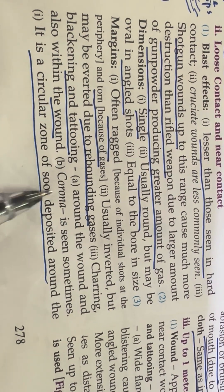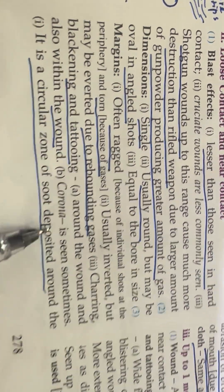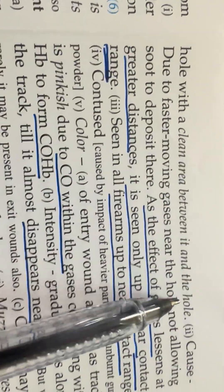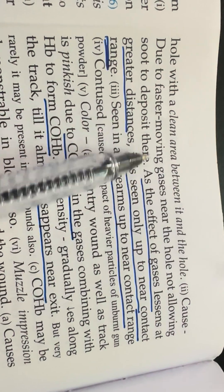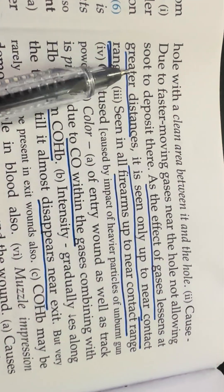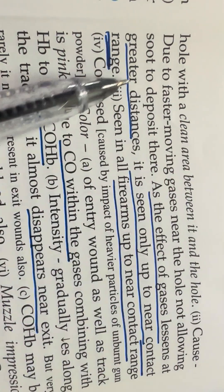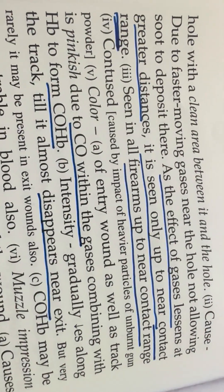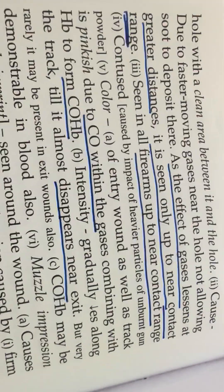Singeing, blackening, and tattooing are present around the wound and also within the wound. A corona is sometimes seen — a circular zone of soot deposited around the hole with a clean area between it and the hole. This is due to faster-moving gases near the hole not allowing soot to deposit there. As the effect of gases lessens at greater distances, the corona is only seen up to near contact range, seen in old firearms up to near contact range.